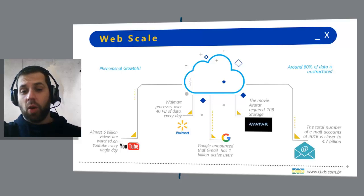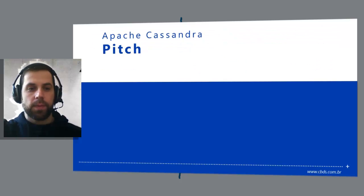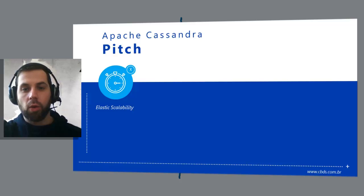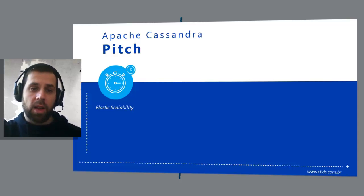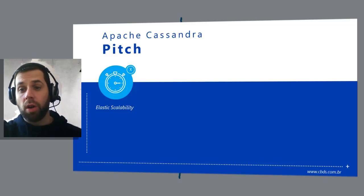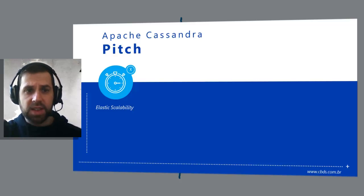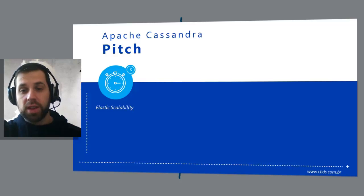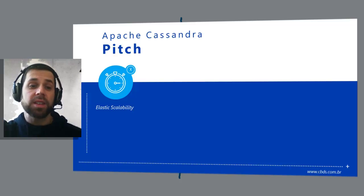In a world now working at web scale, Apache Cassandra might be one part of the answer. Elastic scalability refers to a special property of horizontal scalability — it means your cluster can seamlessly scale up and scale back down. The cluster must be able to accept new nodes that can begin participating by getting a copy of some or all of the data and start serving new user requests without major disruption or reconfiguration of the entire cluster. You don't have to restart your process, change your application queries, or manually rebalance the data yourself. Just add another machine — Cassandra will find it and start sending it work.